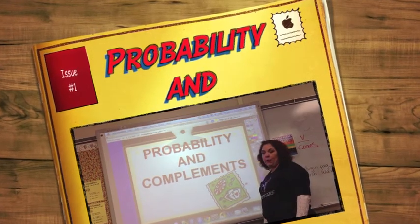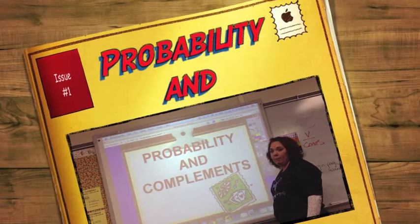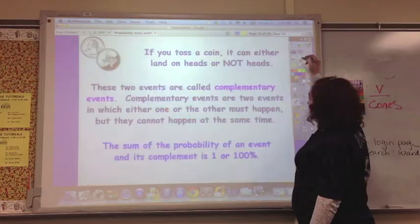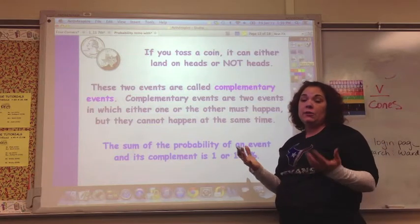This video is the second one on probability and understanding complements of probability. So if you toss a coin, it can either land on heads or tails.